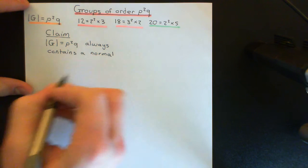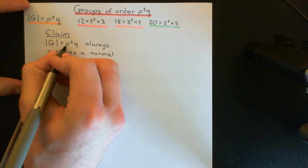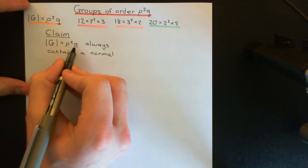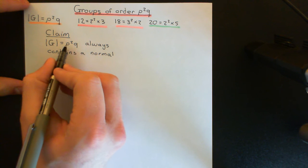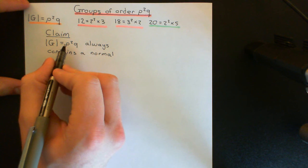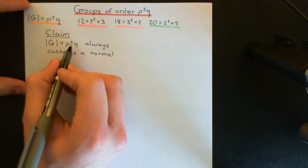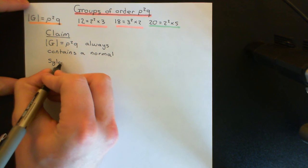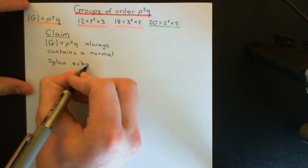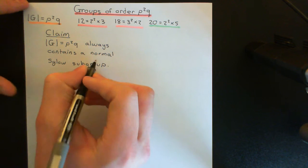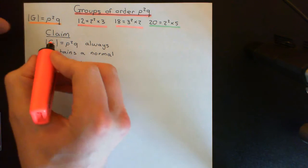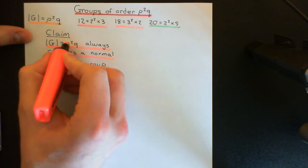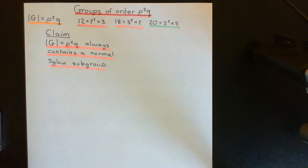Of course, it will have Sylow subgroups pertaining to two different primes, since we have two primes in the factorization. Sylow's theorem tells us about the existence of Sylow-p subgroups and Sylow-q subgroups. The claim is that for at least one of these, it will have a normal Sylow-p subgroup or a normal Sylow-q subgroup.